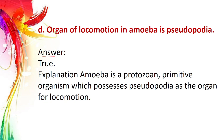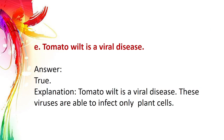Statement C: The organ of locomotion in amoeba is pseudopodia. Answer: True. Explanation – Amoeba is a protozoan primitive organism which possesses pseudopodia as the organ for locomotion. Statement E: Tomato wilt is a viral disease. Answer: True. Explanation – Tomato wilt is a viral disease; these viruses are able to infect only plant cells.